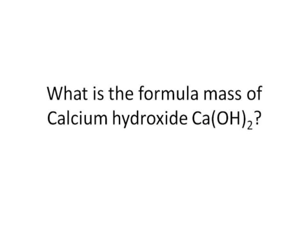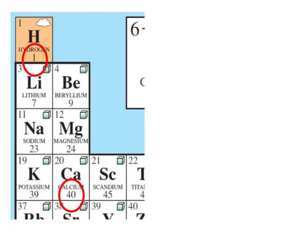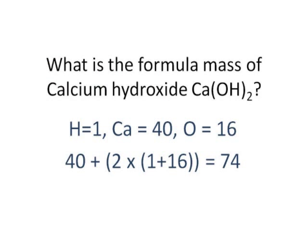Second question, what is the formula mass of calcium hydroxide? We've got brackets in this, so we've got to be a bit careful. Let's have a little look at the periodic table. Calcium 40, hydrogen 1, and we know oxygen is 16. Let's put those in.